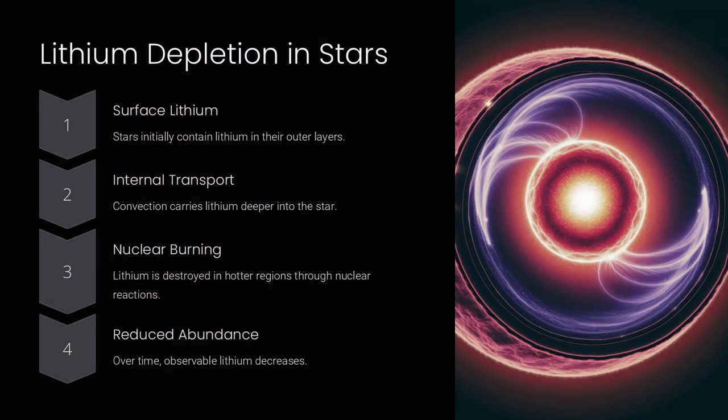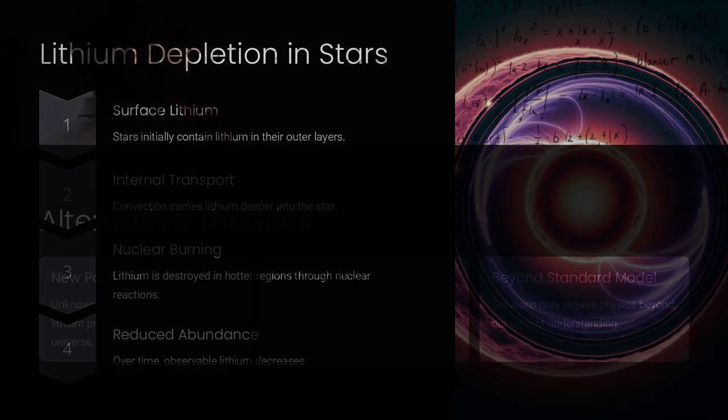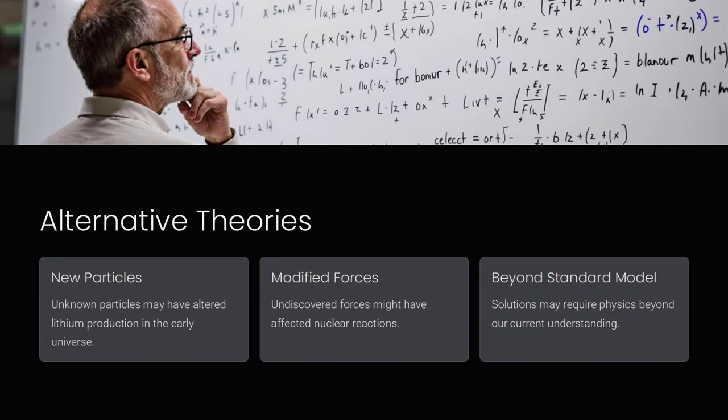Big Bang nucleosynthesis is the process that occurred in the first few minutes after the Big Bang, during which light elements like hydrogen, helium, and lithium were formed.